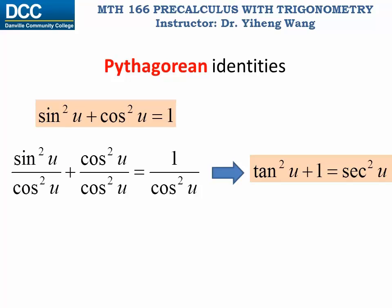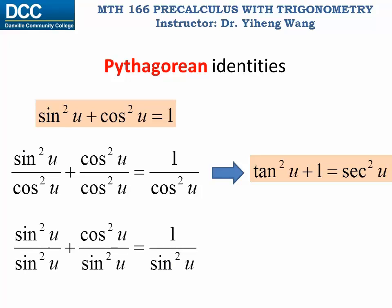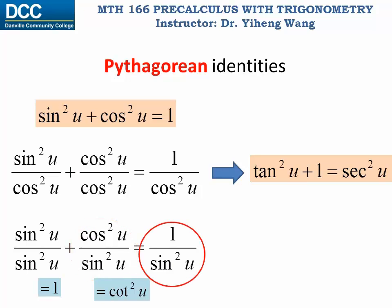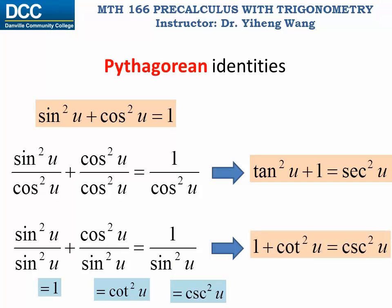Then we take the same first Pythagorean identity and divide both sides by sine u squared. The first term equals one, the second term, according to the quotient identity, equals cotangent u squared, and the last term, according to the reciprocal identity, equals cosecant u squared. We now have the second alternative form of the Pythagorean identity: one plus cotangent u squared equals cosecant u squared.